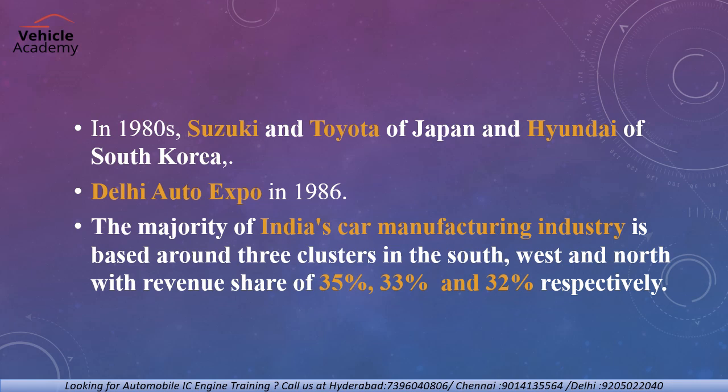In the 1980s, Suzuki and Toyota of Japan and Hyundai of South Korea were allowed to invest in the Indian market, ultimately leading to the establishment of an automotive industry in India. To promote the auto industry, the government started the Delhi Auto Expo, which had its debut showcase in 1986. The majority of India's car manufacturing is based around three clusters — south, west, and north — with revenue shares of 35%, 33%, and 32% respectively. South is near Chennai, west near Gujarat, and north near Delhi-Haryana.